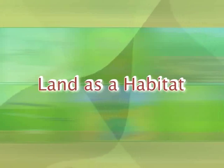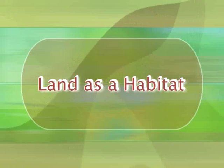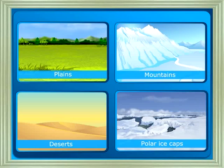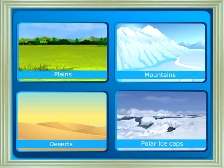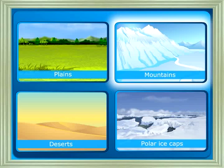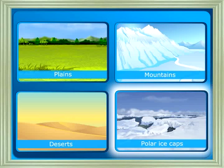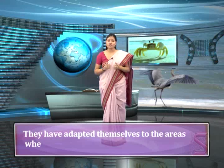Land is divided into specific geographical areas. They can be plains, mountains, deserts, polar ice caps, etc. The movement of animals is also restricted; they generally do not move from a given geographical area.